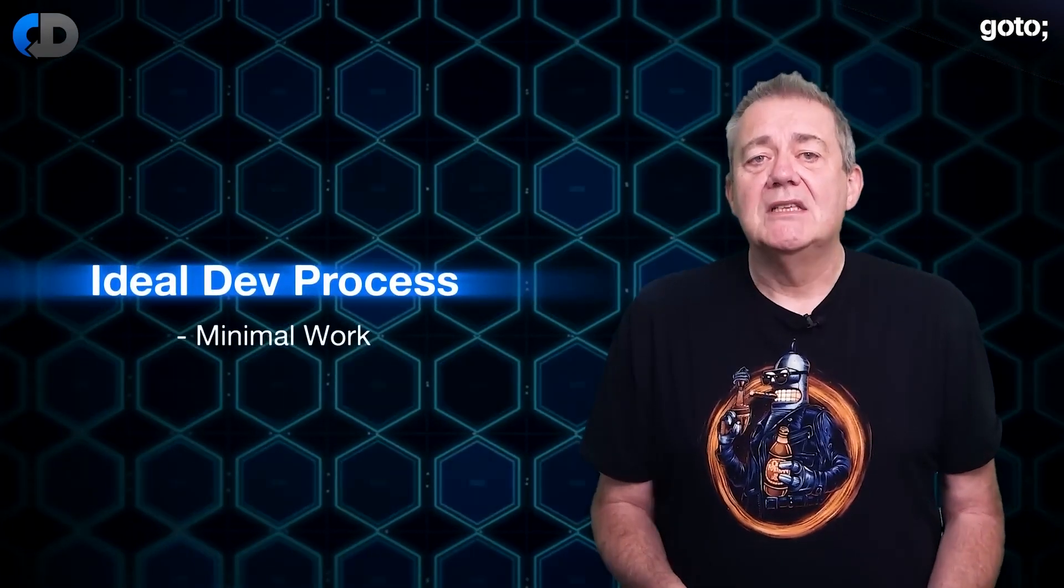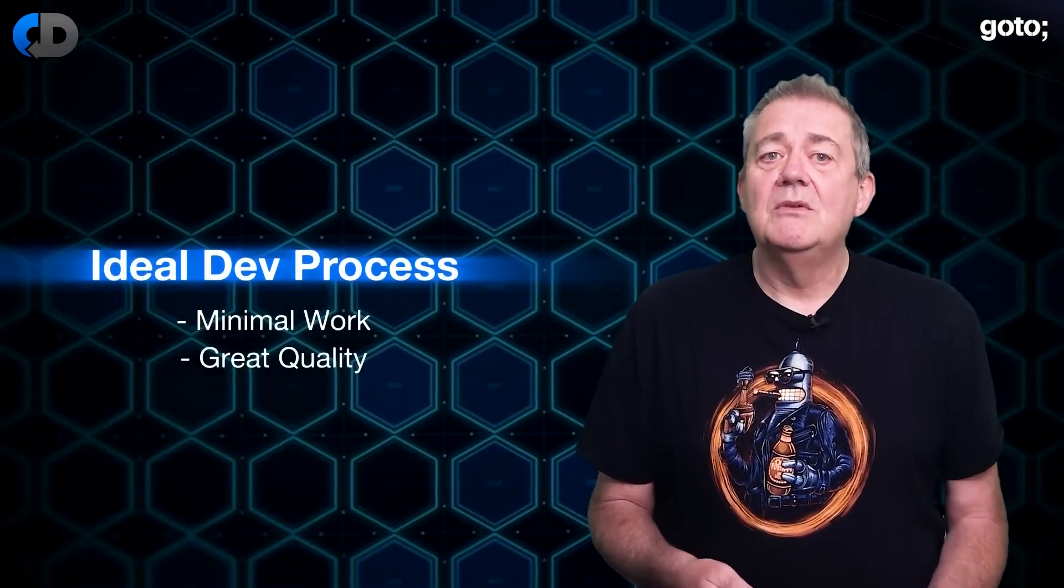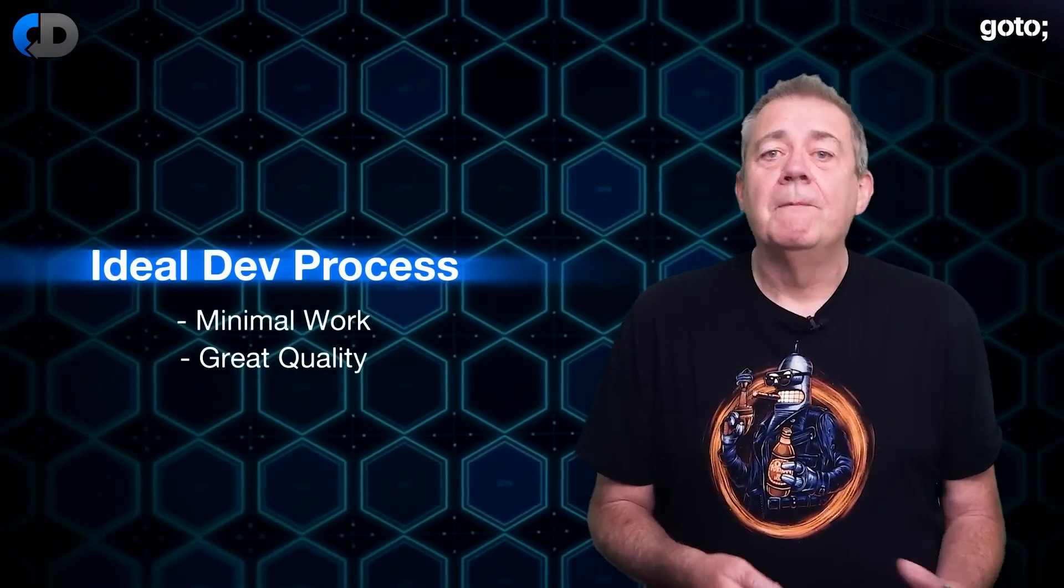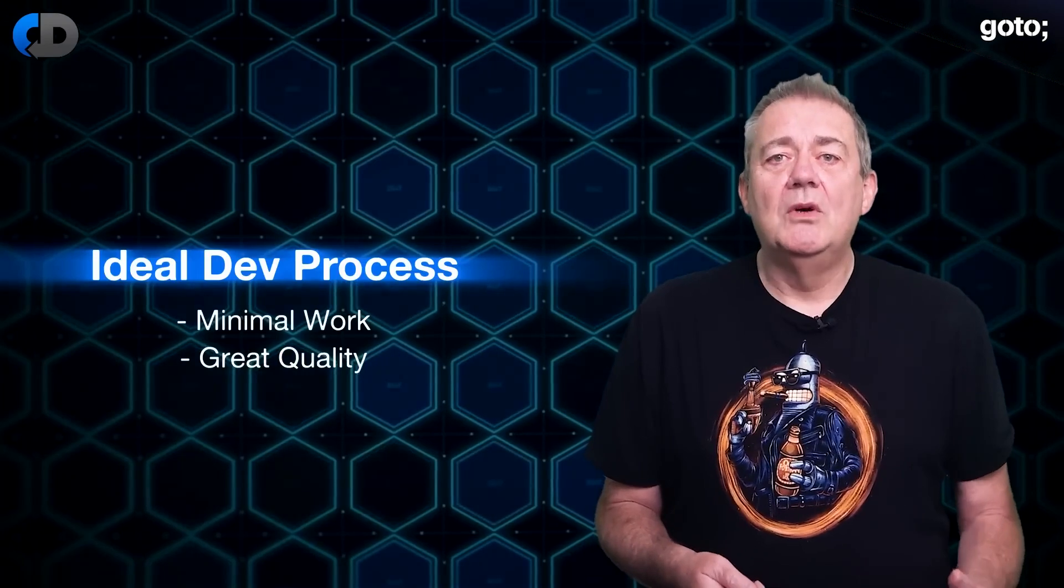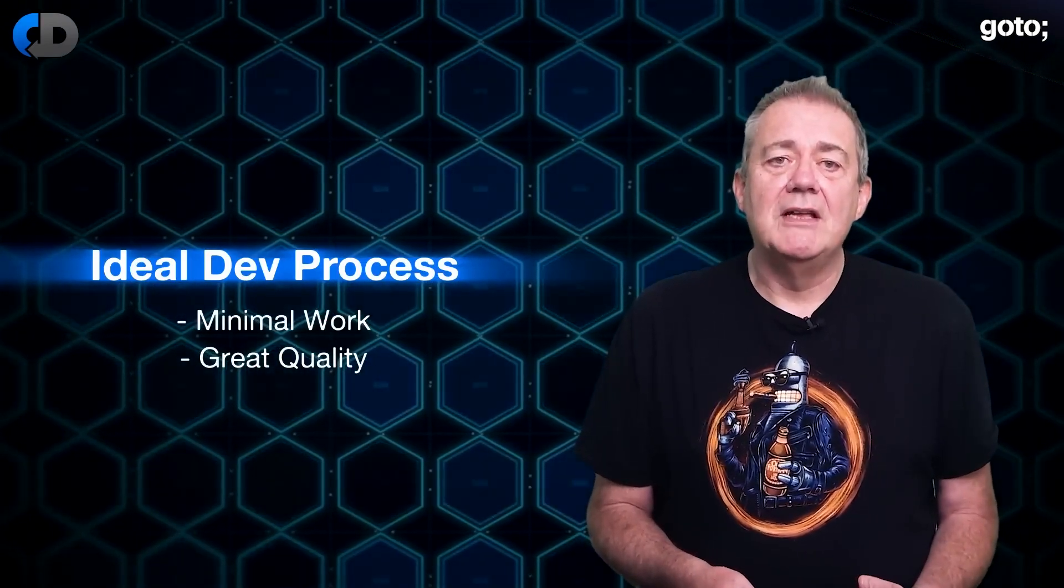If our development process is to be ideal then we'd certainly want great quality too and we'd like to achieve all of this with the minimum amount of work. There's going to be work sure but we'd like the work to be only what's absolutely essential to the delivery of our great quality software. So what if in our ideal development process these were the only things that we worked on? Requirements, code and tests. I suppose it may depend on what we mean by all three but let's start there.